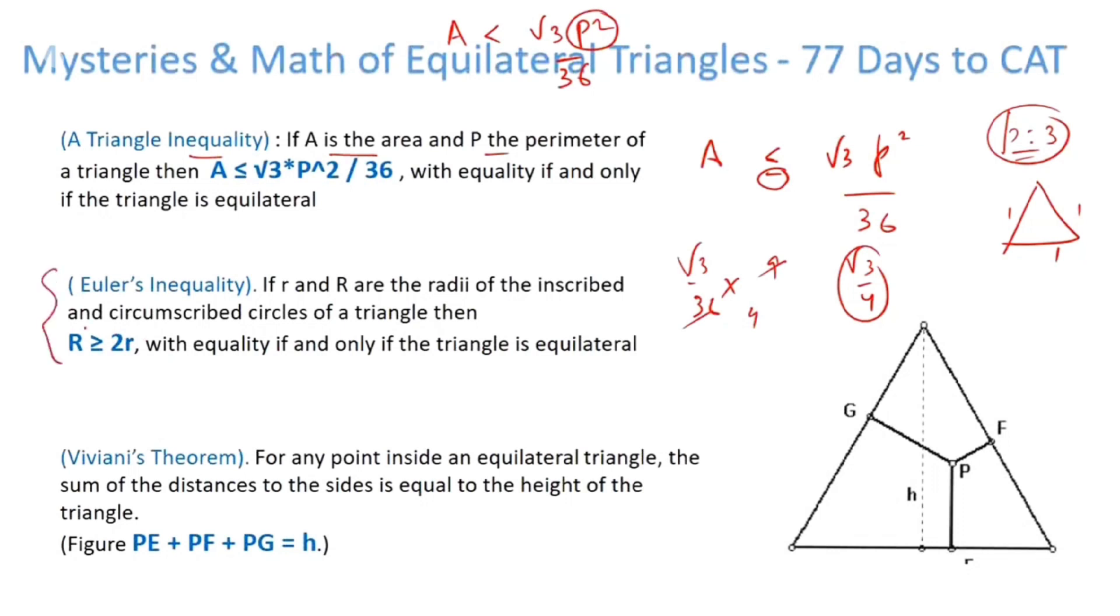Let's move ahead, something called Euler's inequality. What is Euler's inequality? If r and R are the radii of the inscribed and circumscribed circles of a triangle, then R is always greater than equal to 2r. You already know that R is equal to 2r only for an equilateral triangle. For all the other triangles, which are non-equilateral triangles, capital R will be greater than 2r.